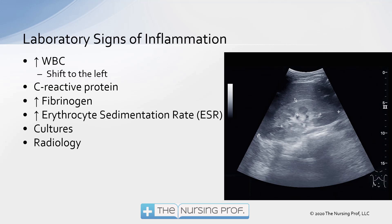Laboratory signs of inflammation: we'll see an increase in white blood cell count, possibly with a shift to the left, indicating more premature or early white blood cells. We can see elevation in C-reactive protein — a direct indicator of inflammation — as well as increases in fibrinogen and erythrocyte sedimentation rate. Cultures may identify bacteria or whatever is causing the inflammation, and radiology — such as ultrasound of a kidney — can detect inflammation deep inside the body.